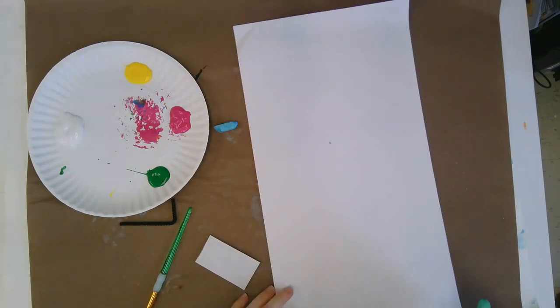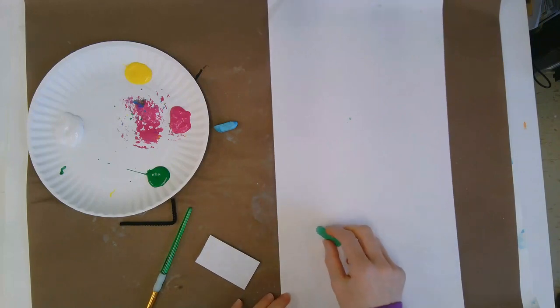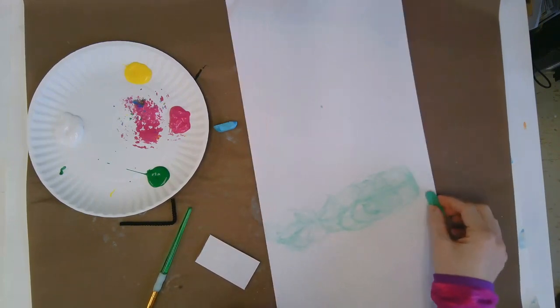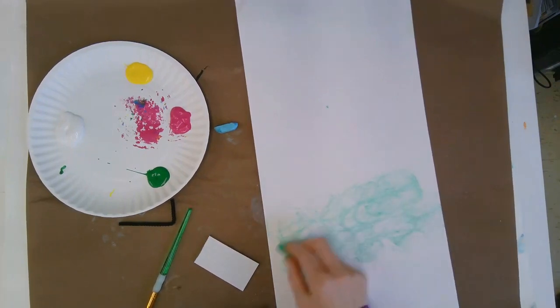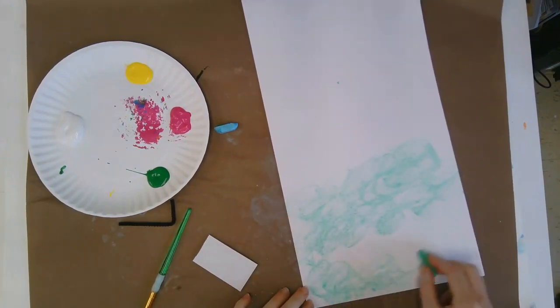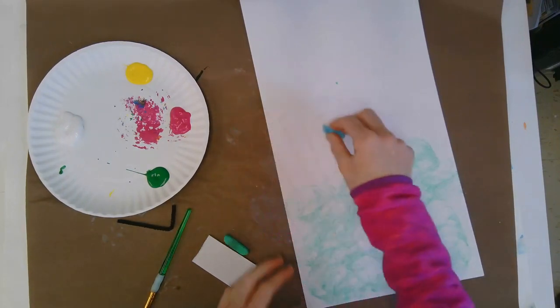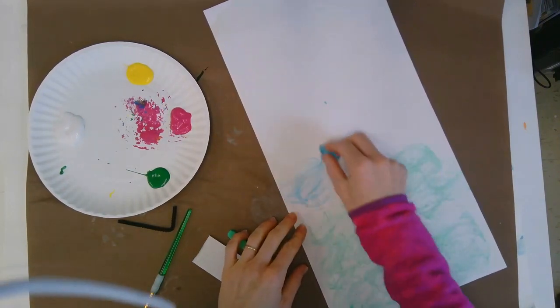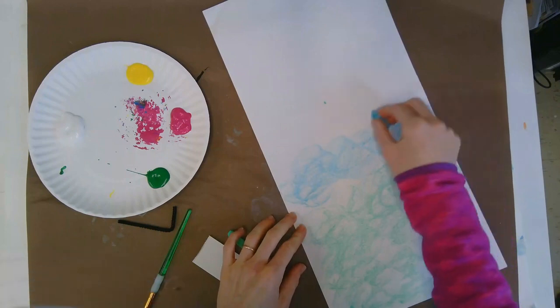I have chalk here to do that and what I want you to do with the chalk is rub it on its side very lightly and create a scene that maybe feels like grass, like a grassy area, and then create a scene on top that feels more like sky area.